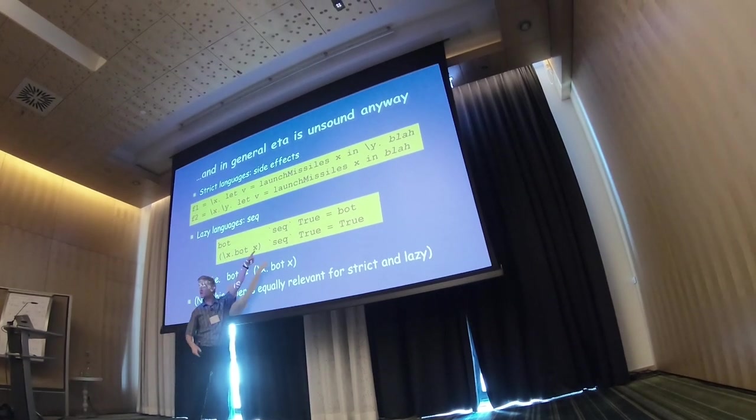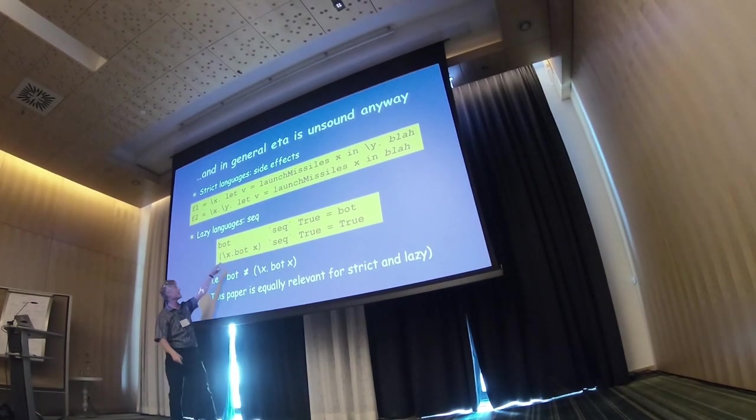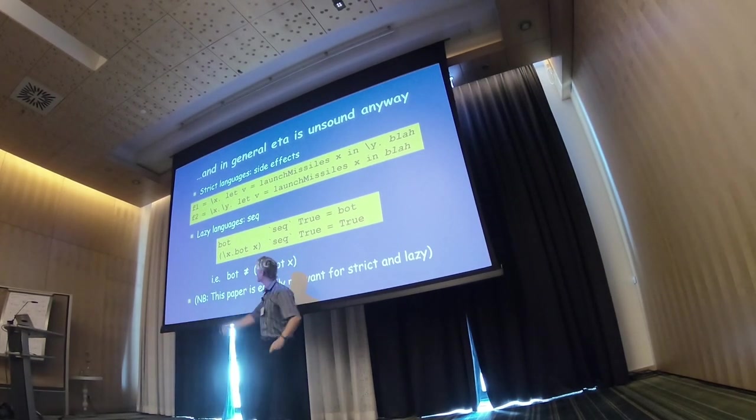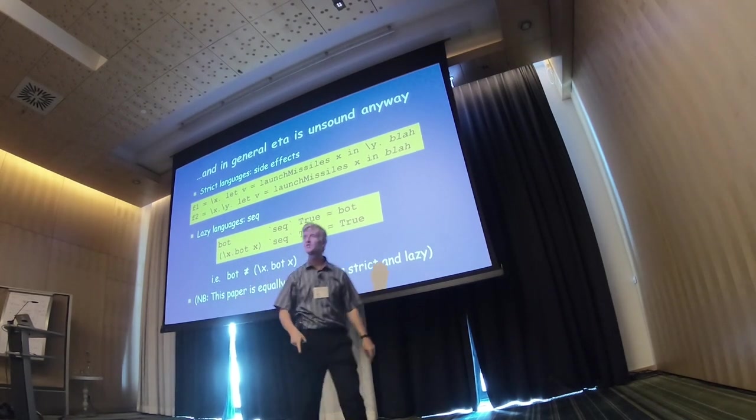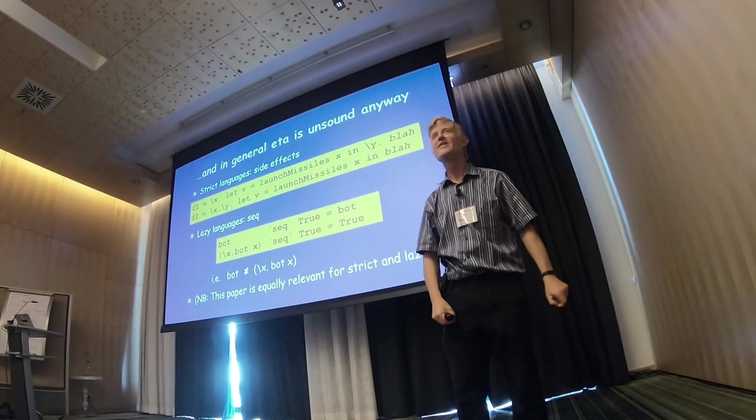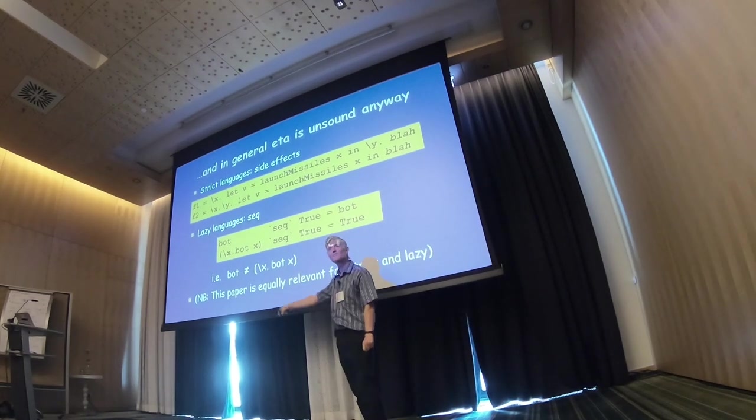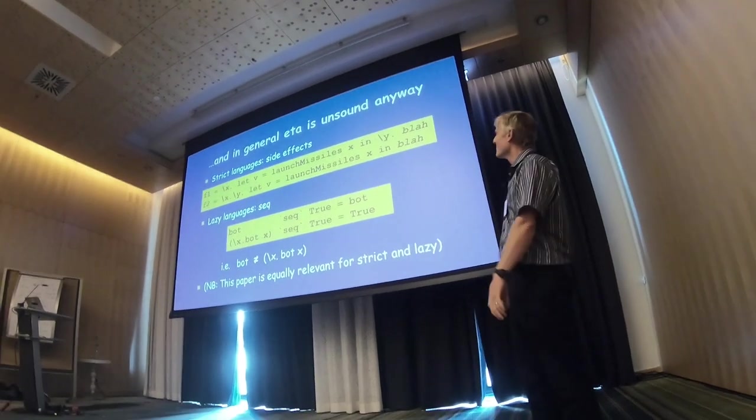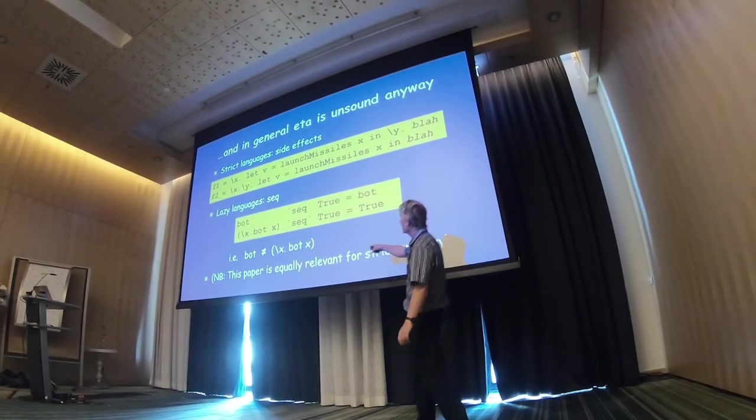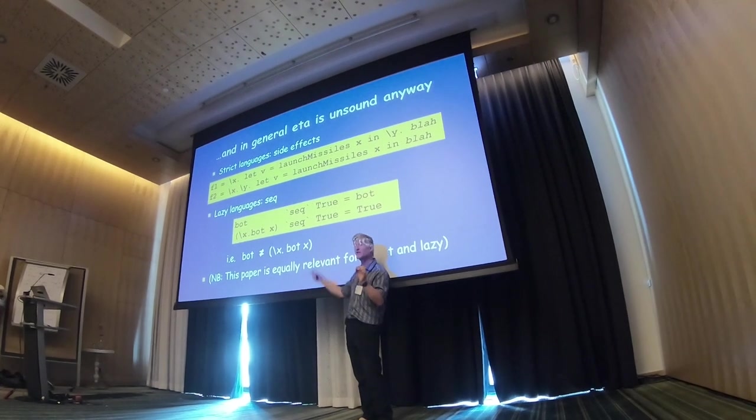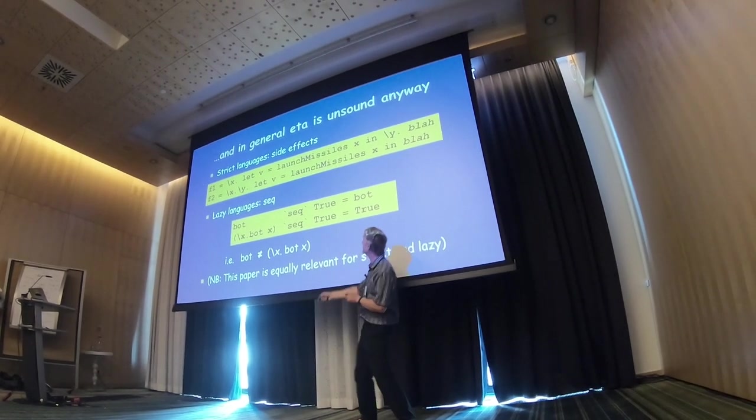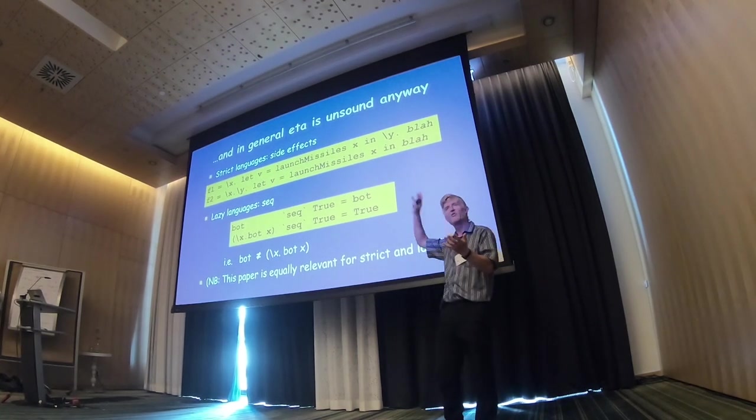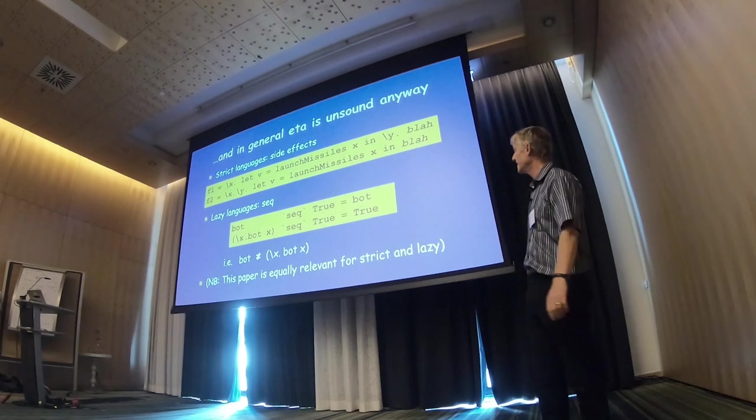Here, in a lazy language, bottom seq true is bottom, so this is Haskell's seq operator, and, but lambda X dot bottom of X, seq true. This is true, right, because we evaluate this lambda. This is all John Hughes's fault, incidentally. He insisted that we distinguish between bottom and lambda X dot bottom. It's been, it's always been horrible, and it's always been the right decision. But nevertheless, there we are. So, even in Haskell, we cannot just unconditionally eta expand. It's actually semantically wrong, as well as being sort of operationally wrong. And even if it were semantically right, it would still have been operationally wrong, so we would still have been worried about eta expansion.